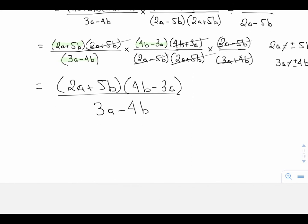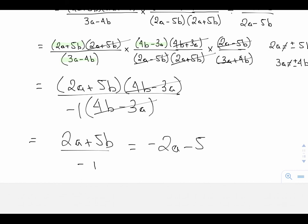It's a trick we've learned before. What we do is we put the 4b in front and the negative 3a after it in brackets and a negative 1 in front. Now these match up and we're left with (2a+5b) over negative 1, which ends up being negative 2a minus 5b.